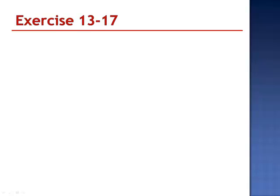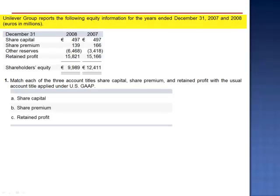Exercise 17. Unilever Group reports the following equity information for the years ended December 31, 2007 and 2008 in millions of euros. We're asked to match each of the three account titles — share capital, share premium, and retained profit — with the usual account title applied under U.S. GAAP.